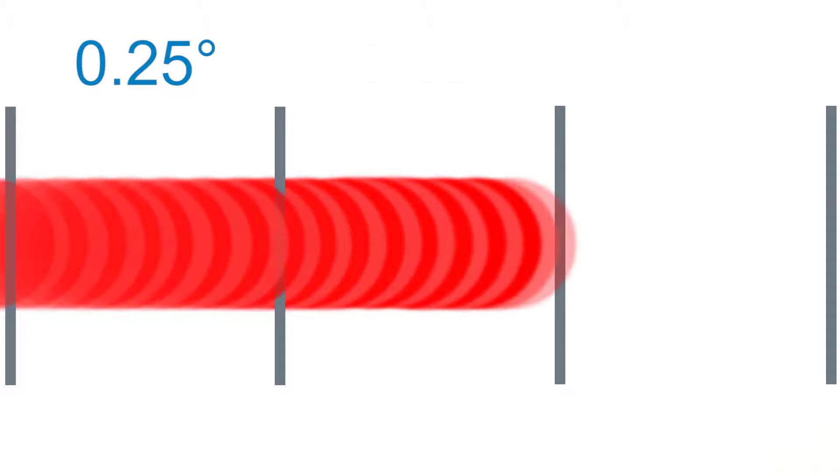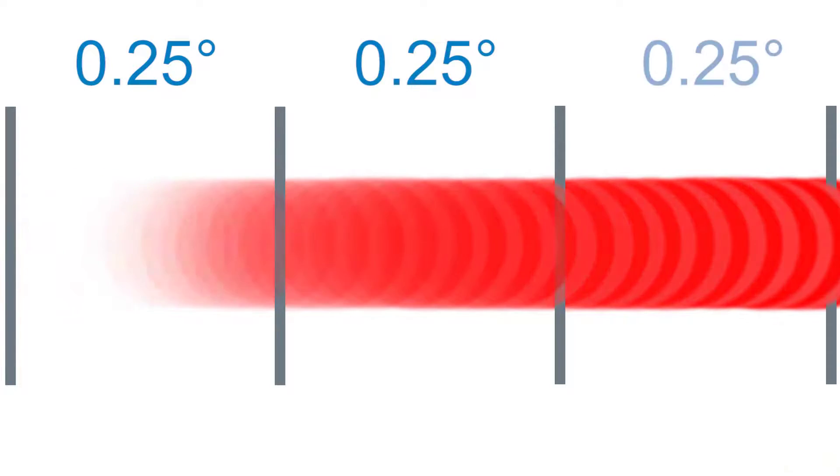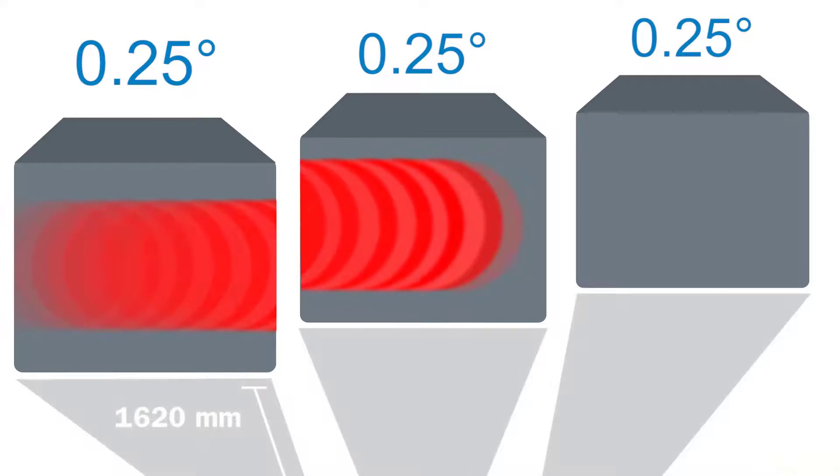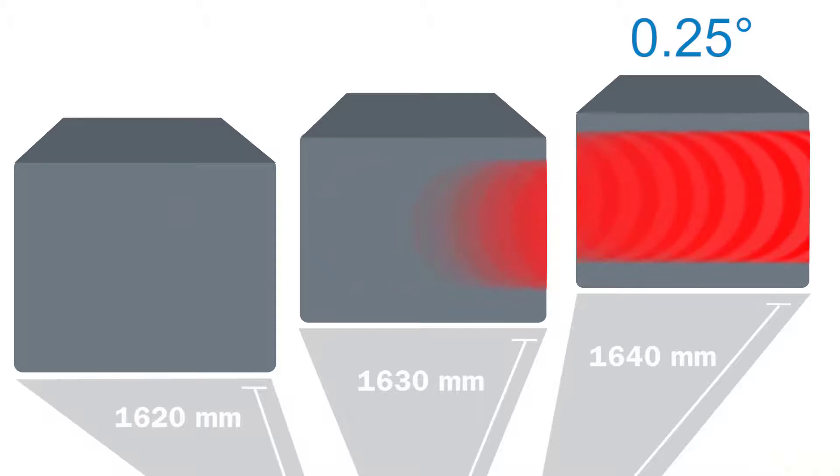The MRS1000 goes even further. This laser scanner uses the advanced HDDM Plus technology, generates almost 100 laser pulses per scan point and uses efficient calculation methods afterwards to provide an angular resolution of a striking 0.25 degrees. The measurement gets even more detailed through this.